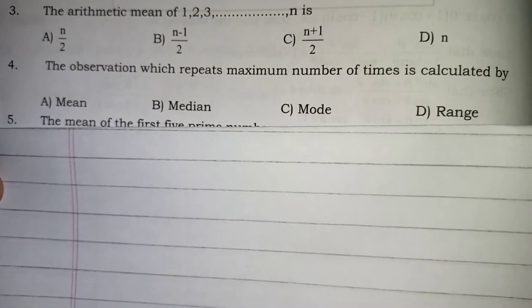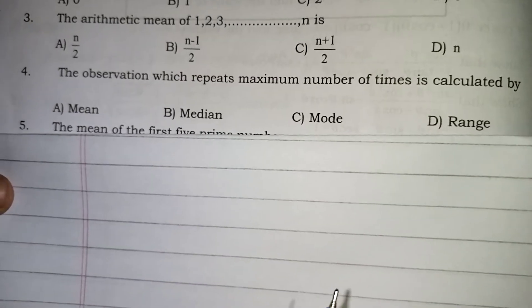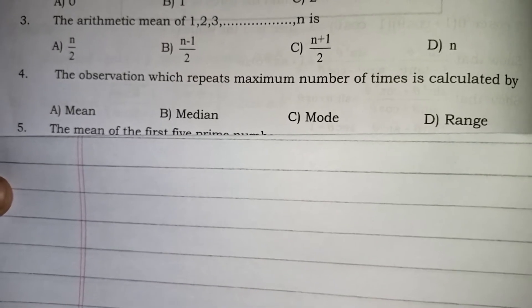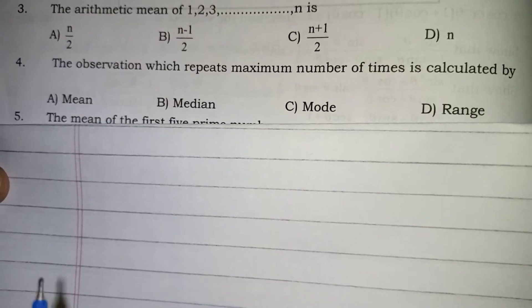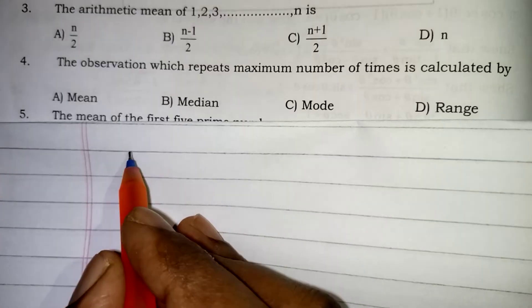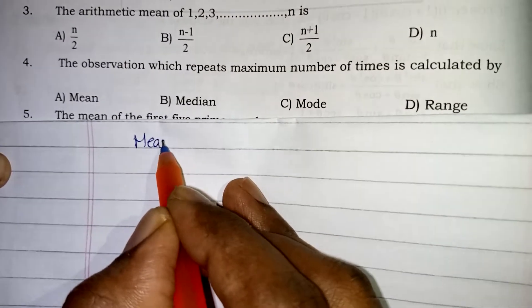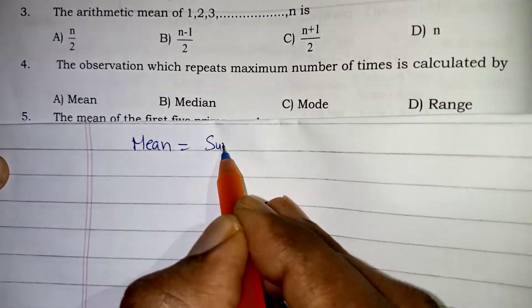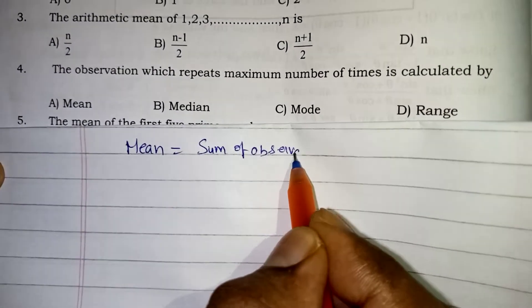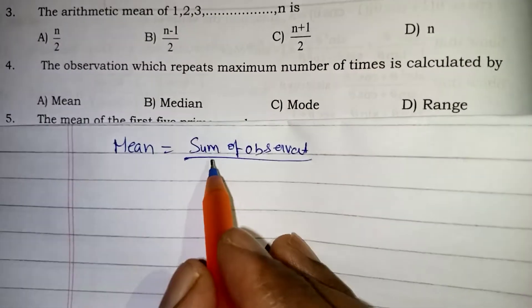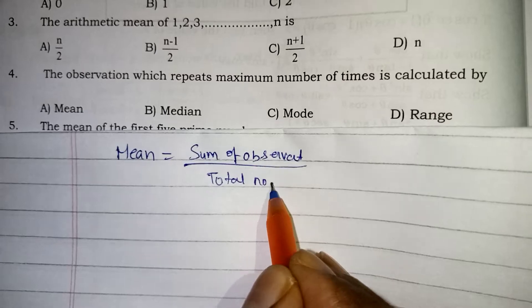We will see the next question. The arithmetic mean of 1, 2, 3 and so on up to N is dash. So the problem can be asked in the 2 mark also. See here arithmetic mean is nothing but mean only. So the basic formula of mean is nothing but sum of all the observation divided by total number of observation. That is a basic formula.